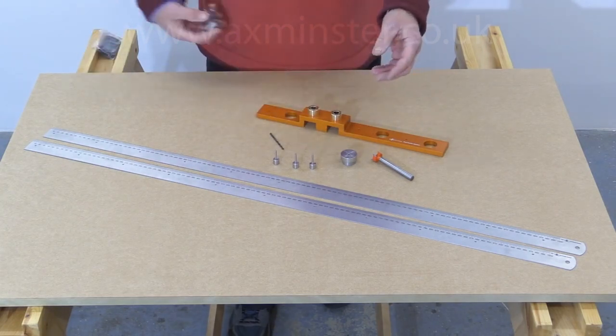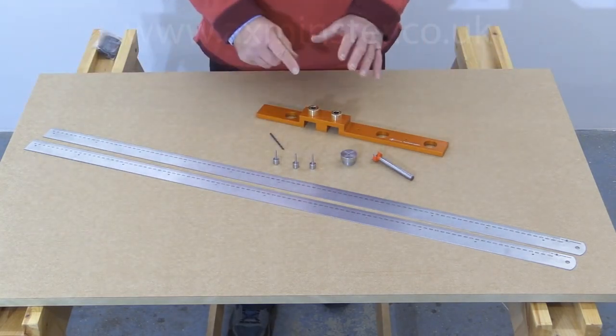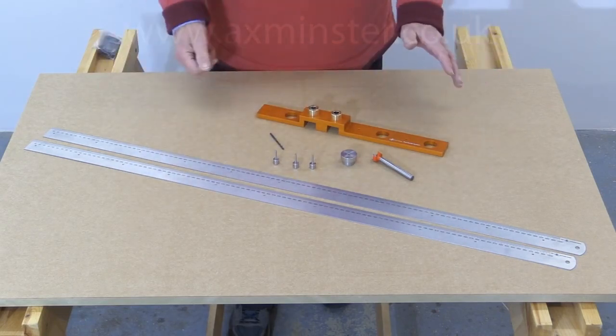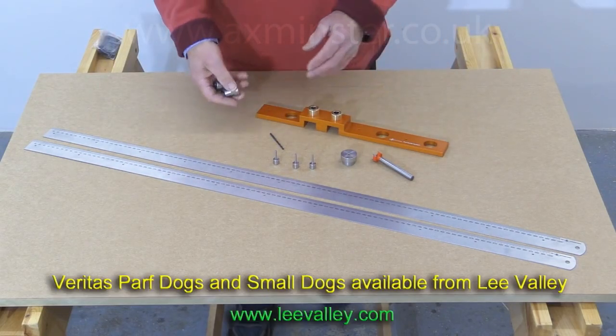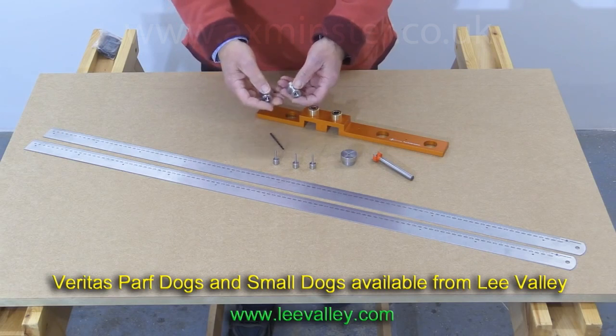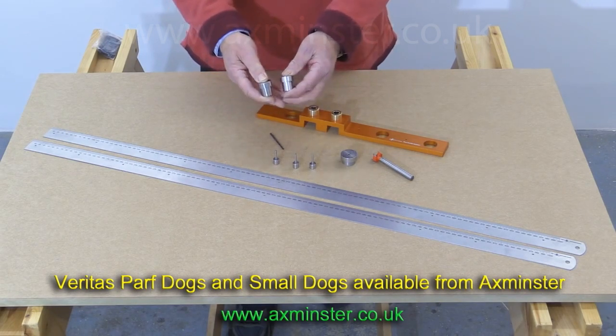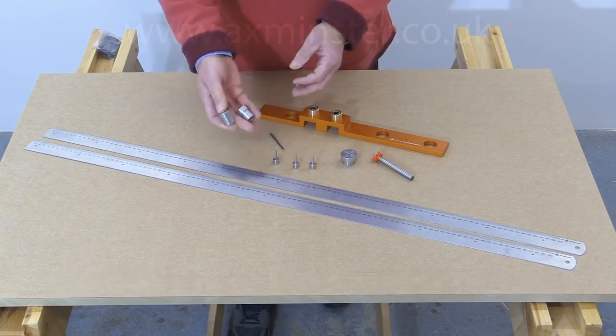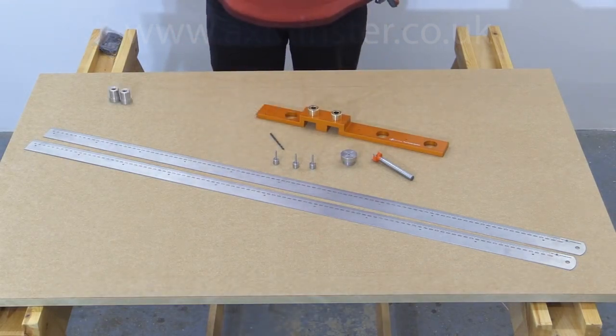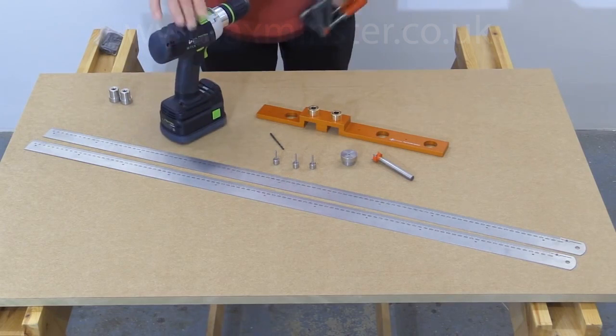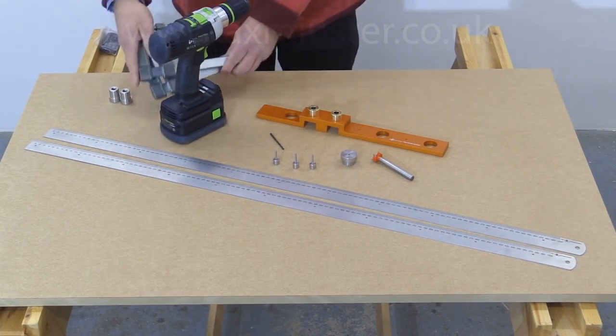If you're going to create a complete pattern of holes over the whole of your benchtop, then you will also need to have a pair of the small bench dogs made by Lee Valley, available from Axminster and available worldwide. And the only tools that you'll require will be a drill and a pair of ordinary small clamps.